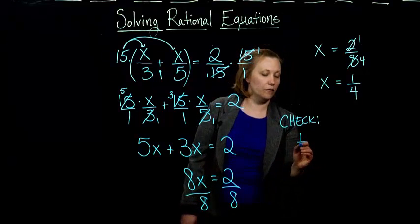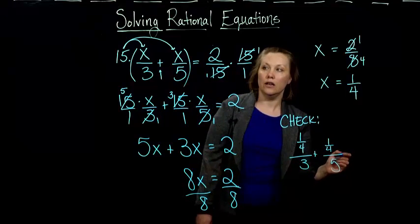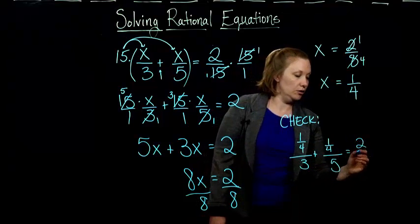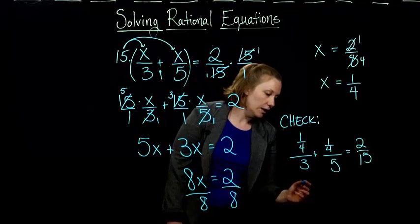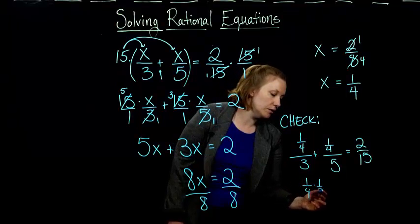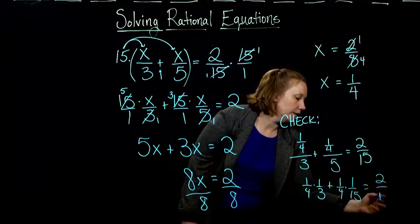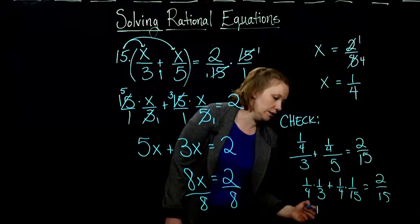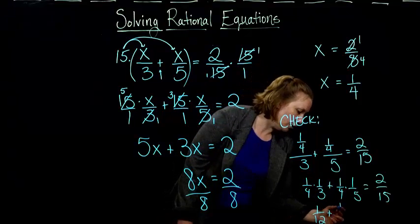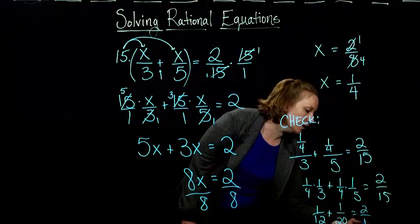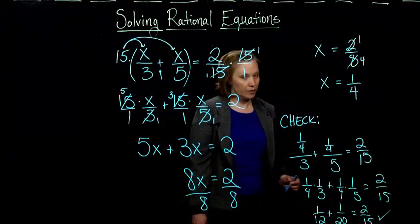If I'm putting in 1 4th for x, I have 1 4th over 3 plus 1 4th over 5, and I should get equal to 2 15ths, right? So we have to remember how to deal with this. 1 4th divided by 3 is the same thing as 1 4th times 1 3rd. And you could play the same game with the 1 4th times 1 5th. And sure enough, when we multiply these together, we get 1 12th plus 1 20th equals 2 15ths. And if we add the 1 12th and the 1 20th, sure enough, we will get 2 15ths. And that's it.